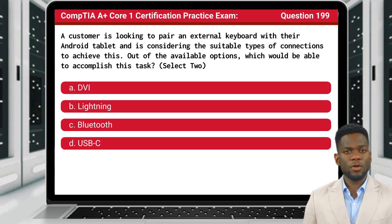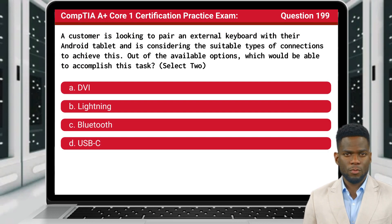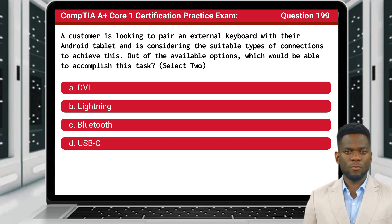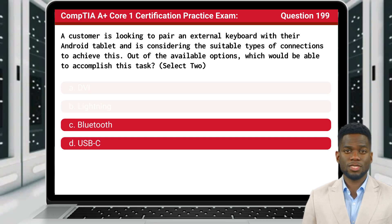Question 199. A customer is looking to pair an external keyboard with their Android tablet and is considering the suitable types of connections to achieve this. Out of the available options, which would be able to accomplish this task — select 2. The answer is C and D: Bluetooth and USB-C.